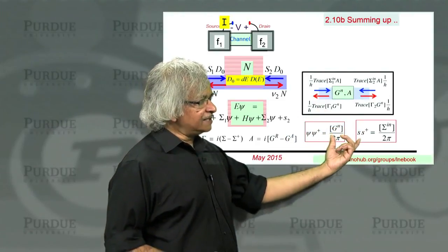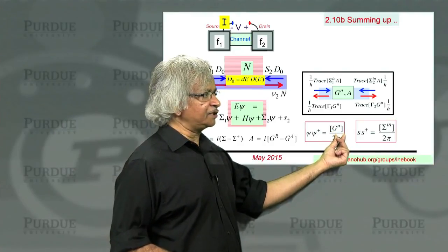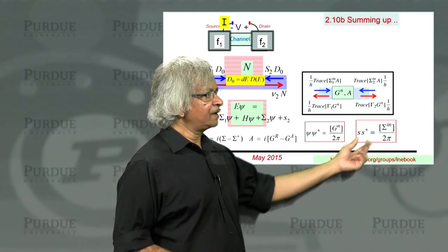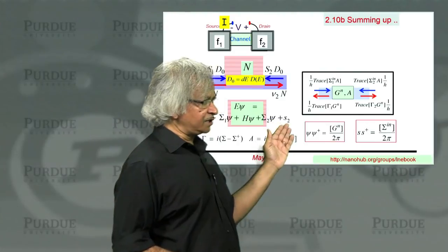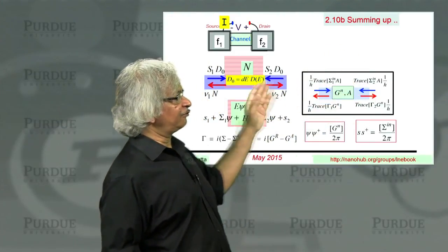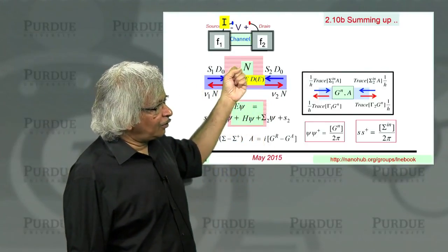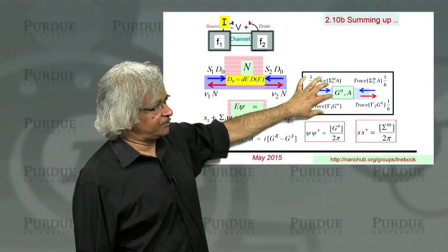Based on these new quantities that we introduced - this GN, which is like the number matrix, sigma N, which describes these source terms - we obtained a flow diagram. It is kind of like the simple particle picture that we had, except that all these quantities have become matrices.